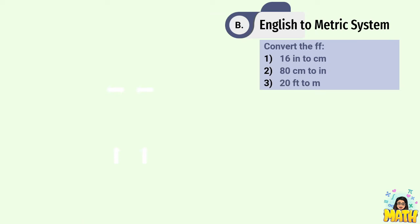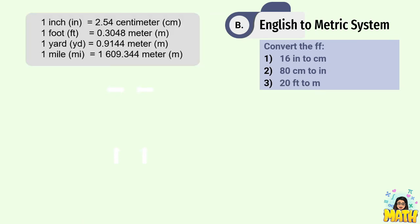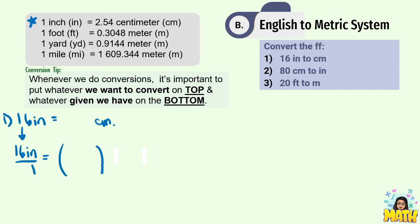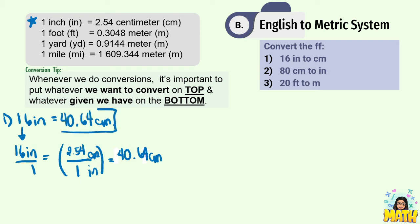Now let's have English to metric system conversion using this conversion table and the same conversion tip. Convert 16 inches to centimeters. We multiply the given over 1 by a fraction where the numerator is the target unit and denominator is the given. Using 1 inch equals 2.54 centimeters: 16 times 2.54 equals 40.64 centimeters. Therefore, 16 inches equals 40.64 centimeters.